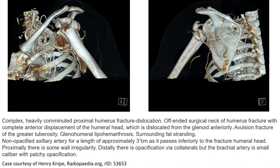This is a complex proximal humerus fracture-dislocation. There is a fracture of the surgical neck of the humerus with complete anterior displacement of the humeral head, which is dislocated from the glenoid anteriorly, an associated fracture of the greater tuberosity, glenohumeral lipohemarthrosis, and a non-opacified axillary artery for a length of approximately 3 cm as it passes inferior to the fractured humeral head.